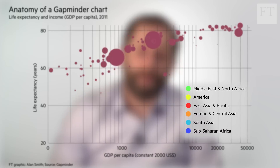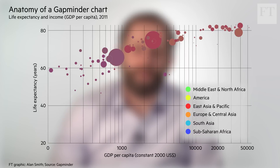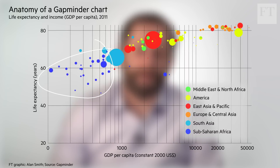Being able to see the size of country populations is useful, but a clever twist of Rosling's is to introduce colour to show us where those countries are without putting them on a map. Now we can see that, for example, in sub-Saharan Africa, people are generally poorer and lead shorter lives than in other regions, such as America.